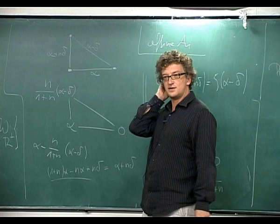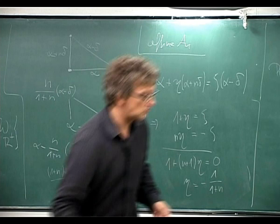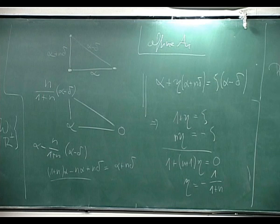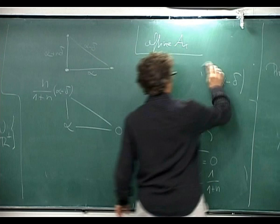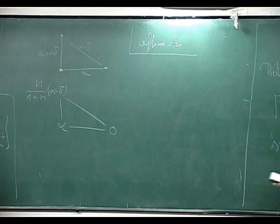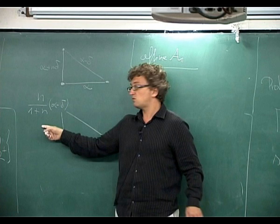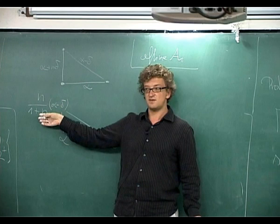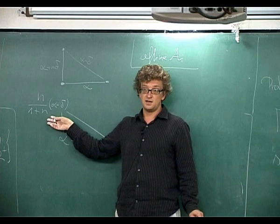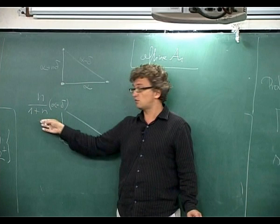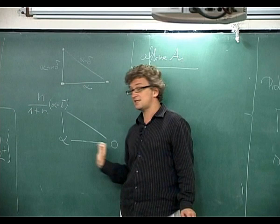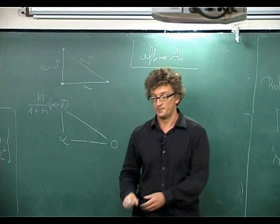The important observation is that even though this moment graph is very simple and smooth in characteristic zero — so we can always extend local sections — we have to divide by something. You see every prime dividing 1+n is bad. If you're working over a field of characteristic dividing 1+n, then you cannot extend this very simple section. It's a very intricate phenomenon.